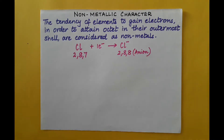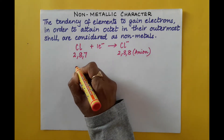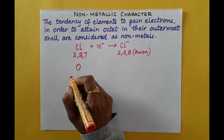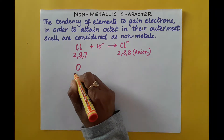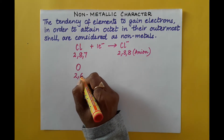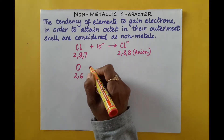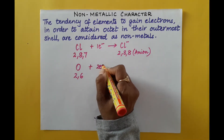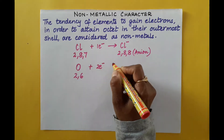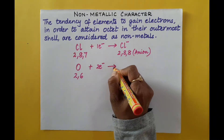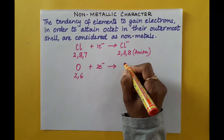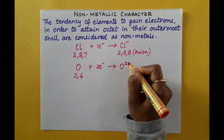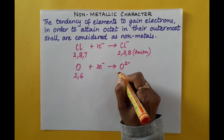Another example is oxygen. Oxygen's atomic number is 8 and electronic configuration is 2, 6. It has to gain two electrons to complete its octet and become stable, and then it becomes the oxide anion with configuration 2, 8.